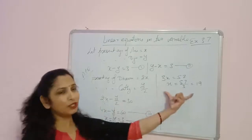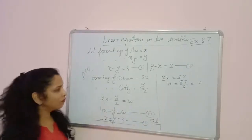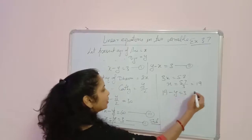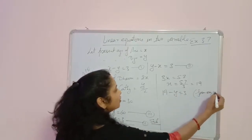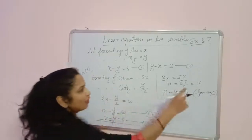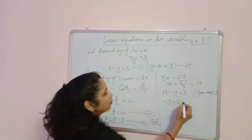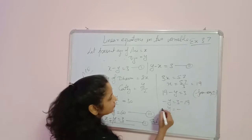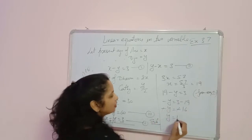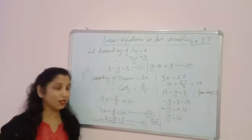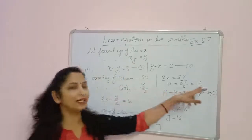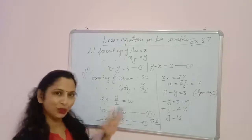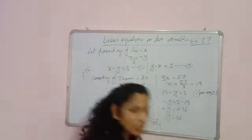Putting x equals 19 into equation 1: 19 minus y equals 3, so y equals 19 minus 3, which is 16. y equals 16. This is not the complete answer — you must write: the age of Ani is 19 years and the age of Biju is 16 years, with units.